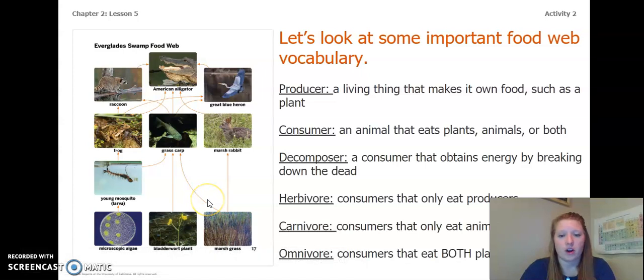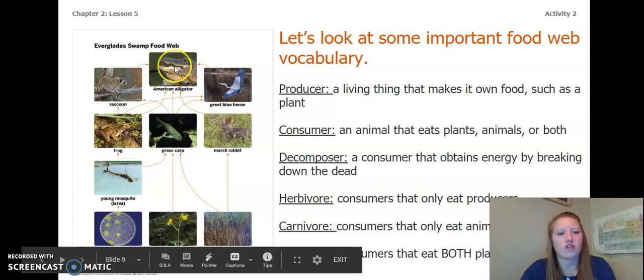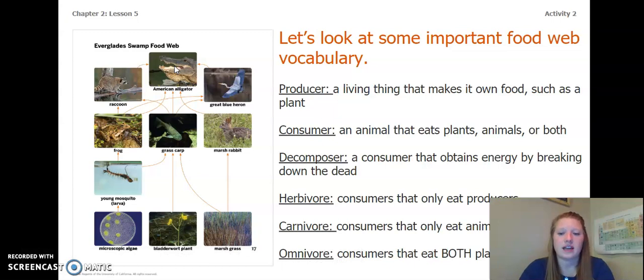Carnivores are consumers that only eat meat. So that would be our great American alligator. And an omnivore are consumers that eat both plants and animals. So that would be our raccoon and maybe our great blue heron.